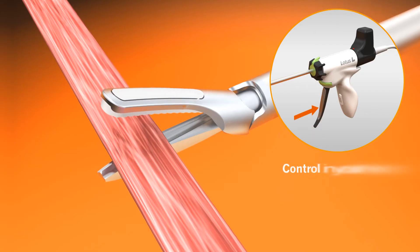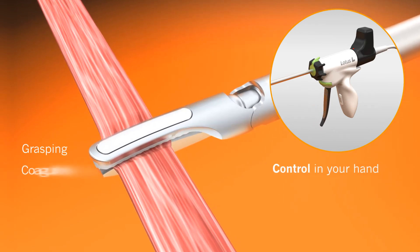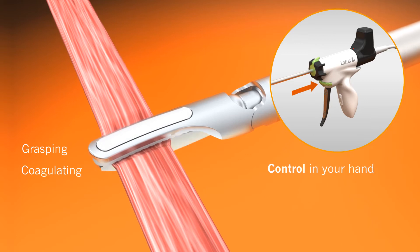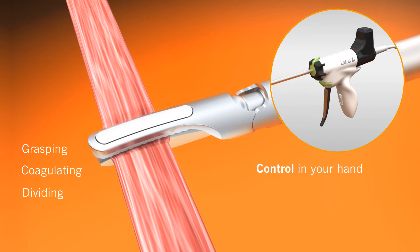Pressure on the handpiece trigger has a direct influence on the cutting speed of the Lotus ultrasonic scalpel. The high tactile feedback enables the surgeon to precisely control the dissection of the tissue.